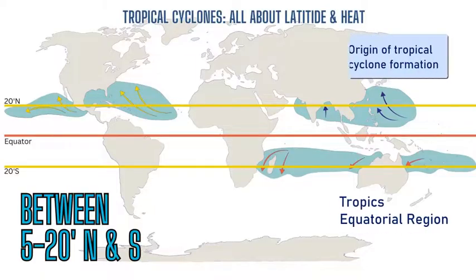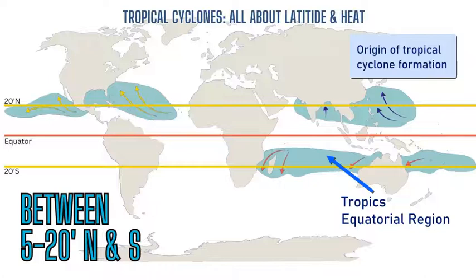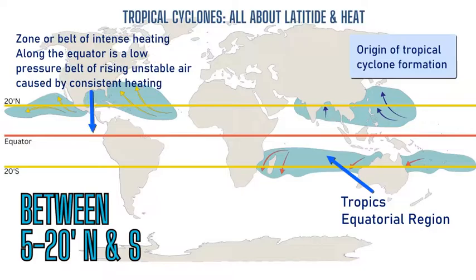The formation of these cyclones occurs at certain geographic locations across the planet — over oceans, over very warm oceans — around the tropics, between 5 degrees and 20 degrees north and south of the equator, as shown in the map. The formation and origin are based on latitudes that correspond to sea surface temperatures being high enough to create the amount of water vapor required, but it all has to start around the tropics.